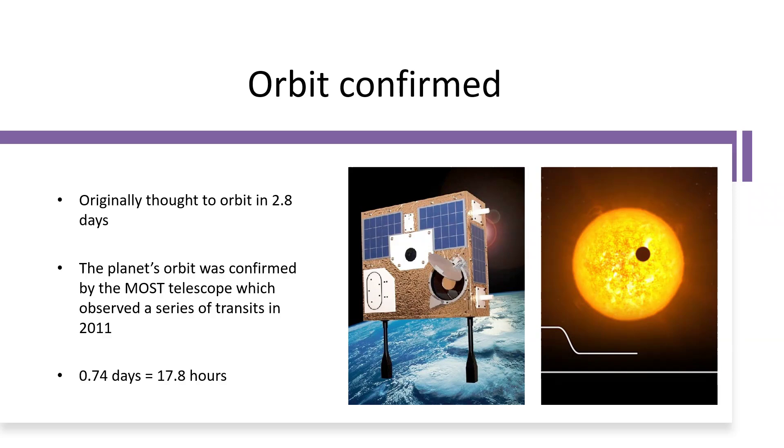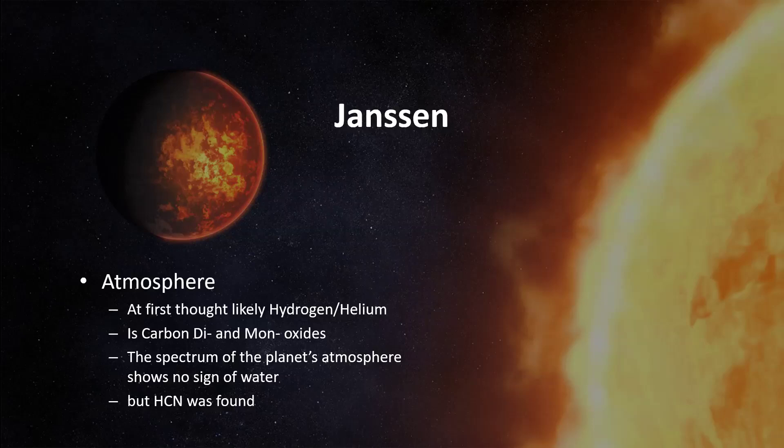It was the MOST telescope that made this discovery. Back to planet Janssen: it was originally thought such an object would have a hydrogen-helium envelope around it as an atmosphere, but actually it looks more like carbon monoxide and carbon dioxide in the atmosphere — just as predicted for a carbon planet — and there is no sign of any water either, which backs up the idea. What they did find was hydrogen cyanide in the spectrum of the gases around the planet, again pointing to an excess of carbon. So this could well be the first proper discovery of a true carbon planet — absolutely searing hot and a thoroughly nasty place to visit.